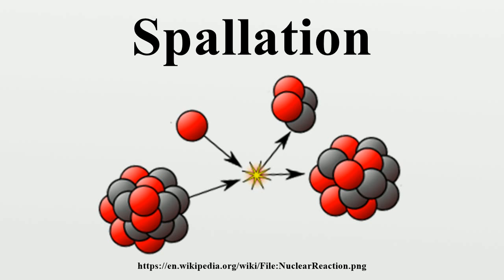Spallation commonly occurs on mineshaft walls. In the context of anthropology, spallation is a process used to make stone tools such as arrowheads by knapping. In nuclear physics, spallation is the process in which a heavy nucleus emits a large number of nucleons as a result of being hit by a high-energy particle, thus greatly reducing its atomic weight.